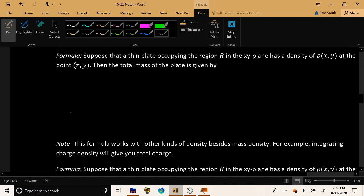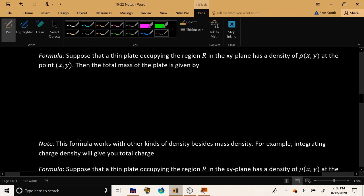So suppose we do have something like a thin plate, some sort of essentially two-dimensional object, occupying a region R in the xy-plane. And let's suppose that the object has a density of a function called ρ(x,y). Rho, I think, is the traditional notation.